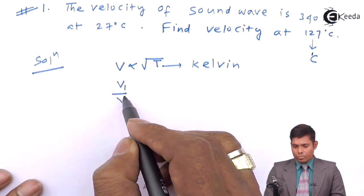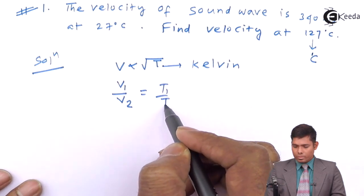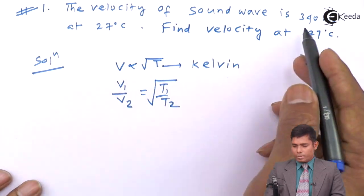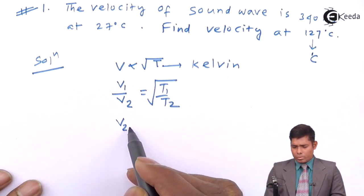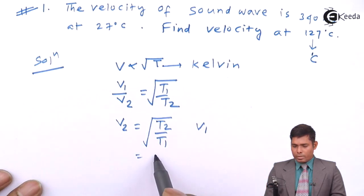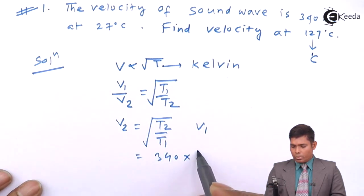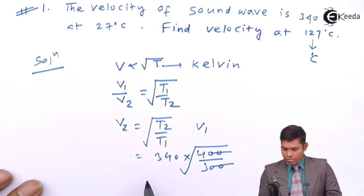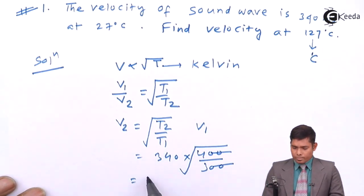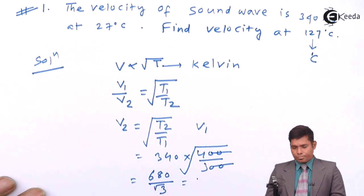So, V1 by V2 is T1 by T2. Initial V1 is given. So, I will rearrange this. This is V2 equals to T2 by T1 into V1. V1 is 340, T2 is 400, this is 300 root. This gives us 680 divided by root of 3 which comes out to be around 392.6 meter per second.